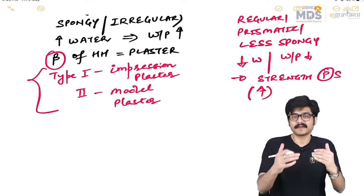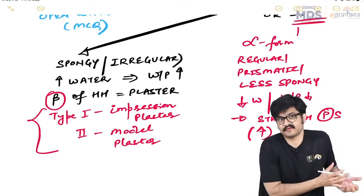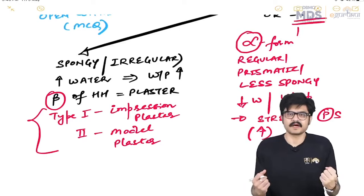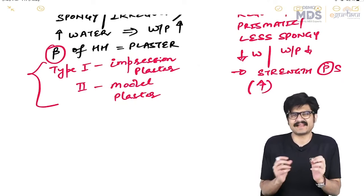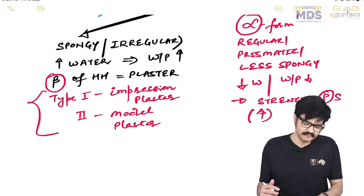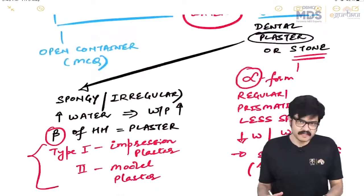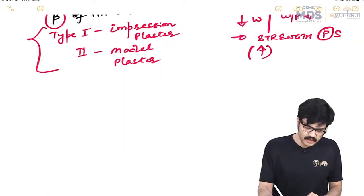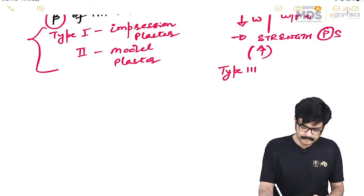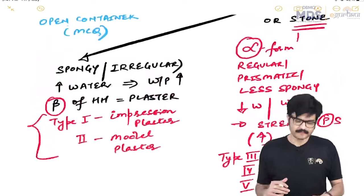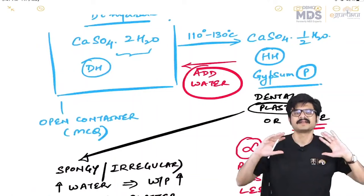A mnemonic: alpha comes before beta — alpha is 'stronger,' just like common usage of 'alpha male.' So the alpha form of the hemihydrate is the stone, not the plaster. Types 3, 4, and 5 are the alpha forms, while Types 1 and 2 are the beta forms.